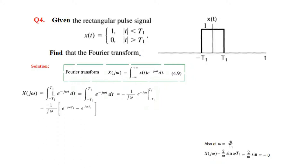Putting in the two limits, we get these two terms: e to the minus jωt1, and minus e to the jωt1. Because minus and minus become plus, that is why we have a plus sign here.